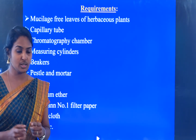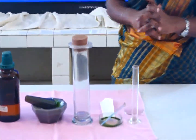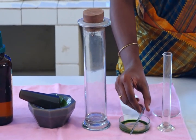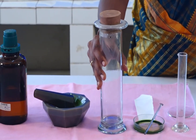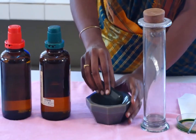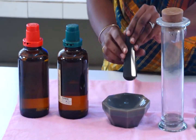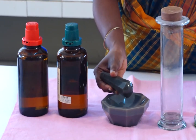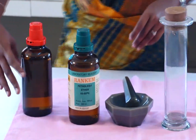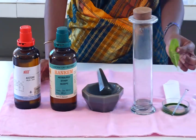For the procedure, we need a beaker, a glass rod, and the chromatography chamber. We also have the pestle and mortar — the mortar is the bowl and the pestle is used for grinding. We need petroleum ether and acetone as the basic reagents.